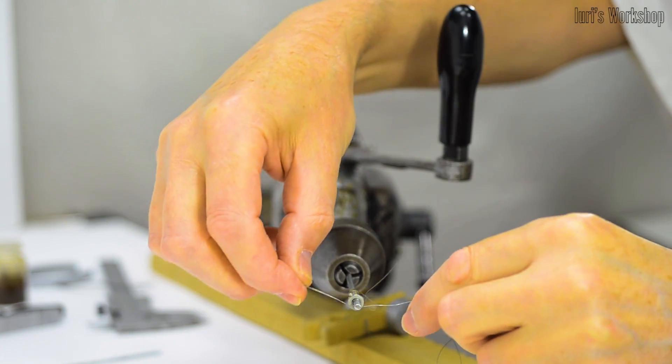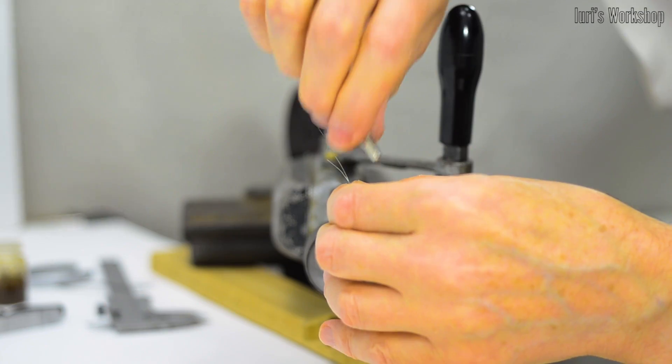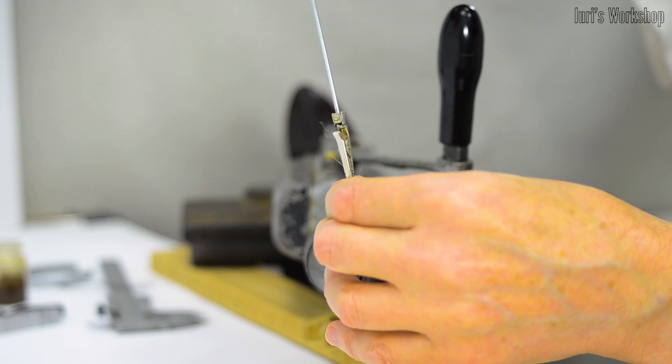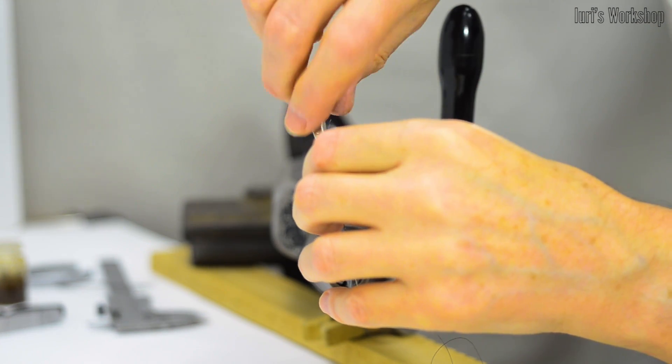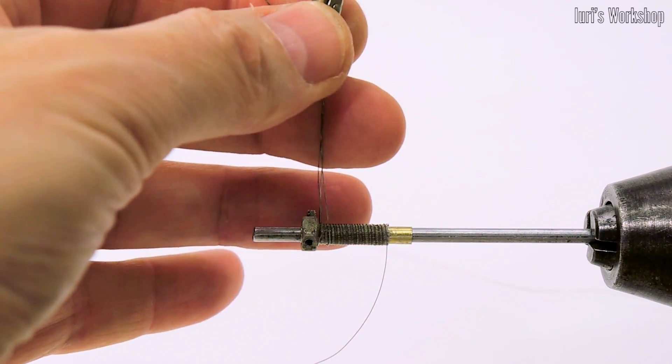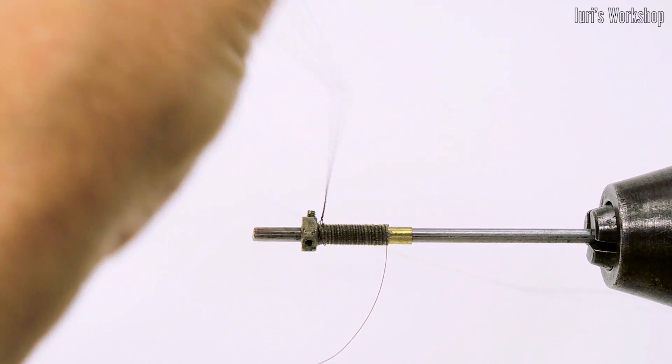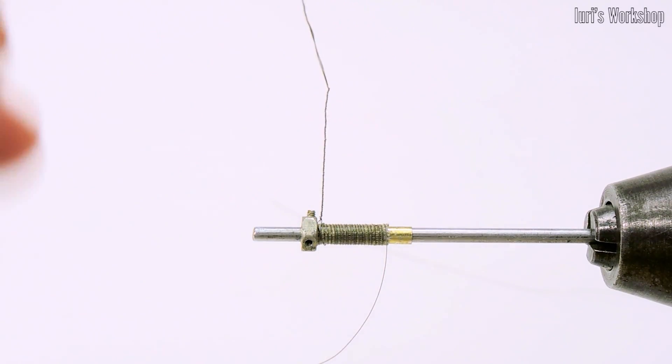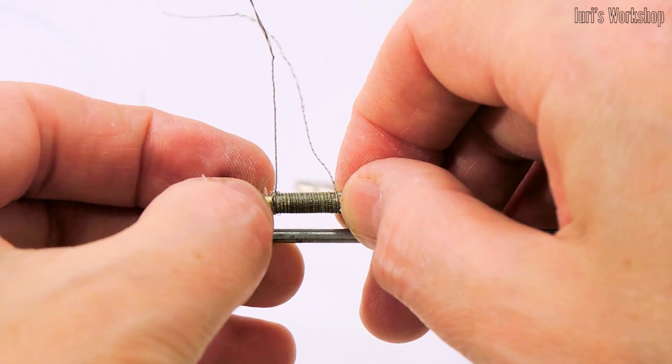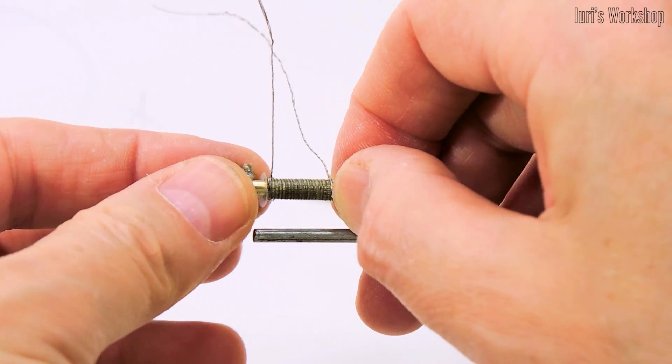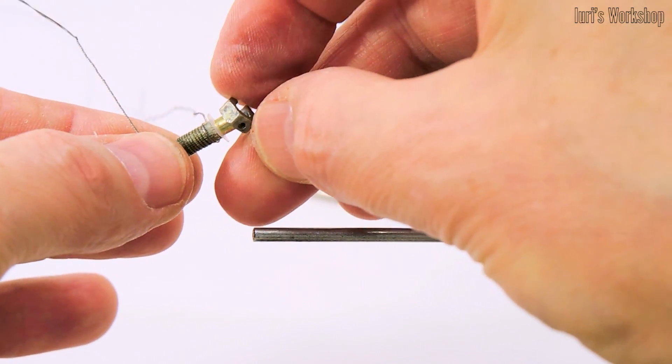For reliable contact of the leads of the heating element with the power cable, I reinforced the ends of the spiral with a galvanized copper wire. It is more convenient to do this with the help of such a simple device. Teflon washers are installed temporarily. They will not allow heat-resistant mastic to stick to the soldering iron's structural elements.